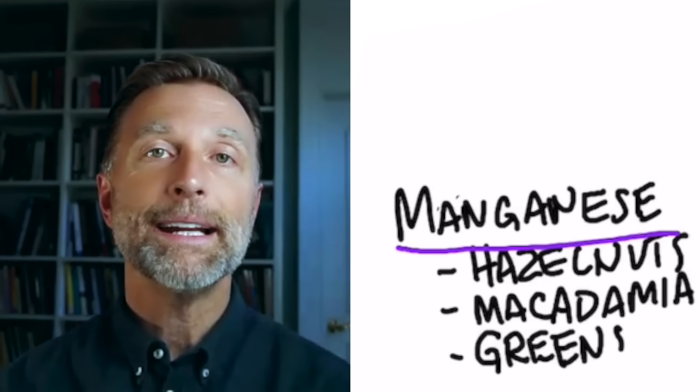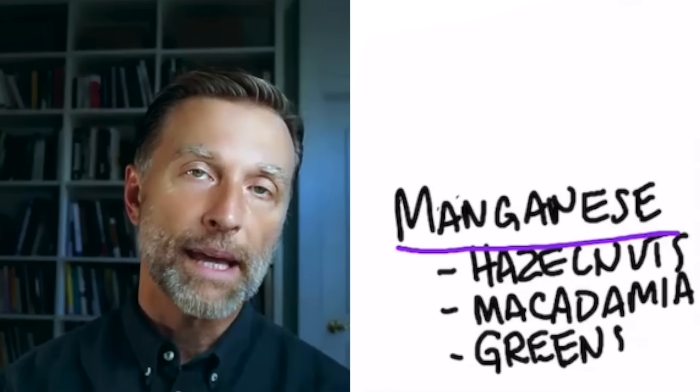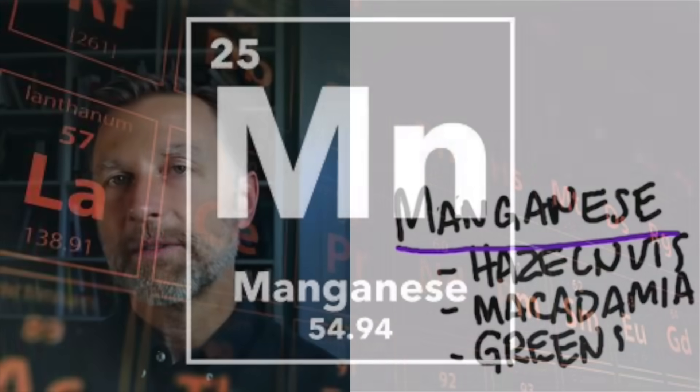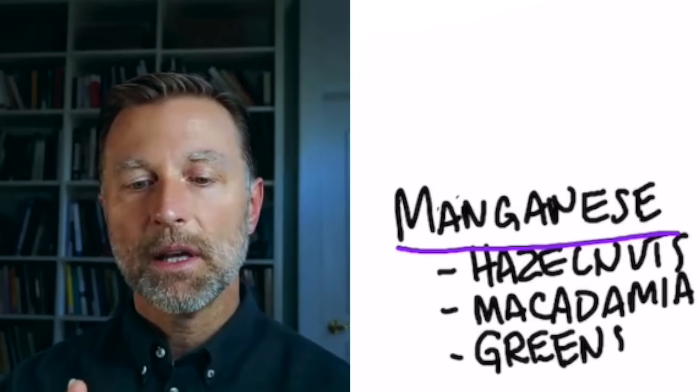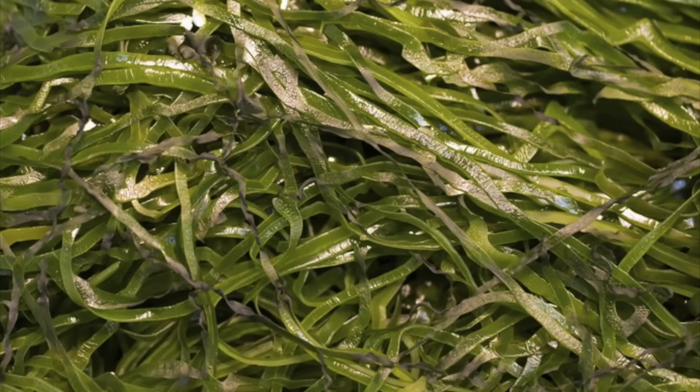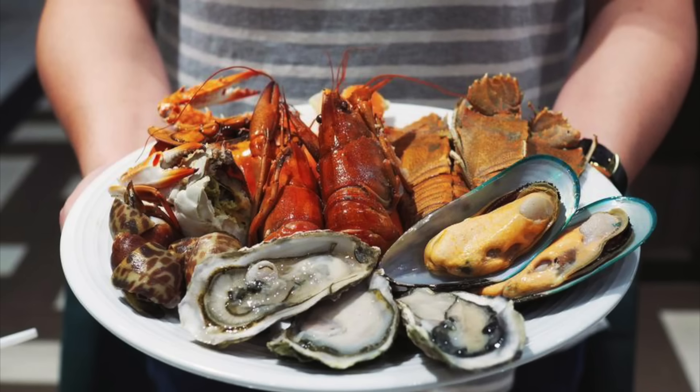And then you have a trace mineral called manganese, which is also important in making acetylcholine. A couple of good sources of manganese, and there's a lot of different sources, but hazelnuts, macadamia nuts, as well as leafy greens. But you can also get it from sea kelp and shellfish and many different things.